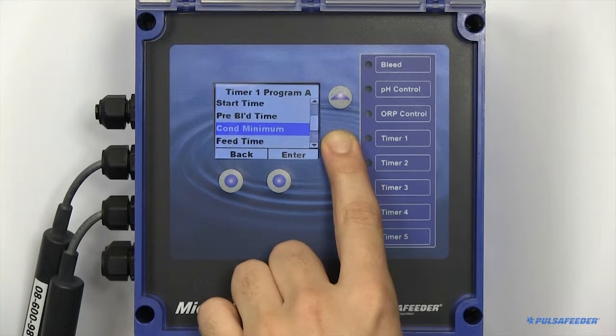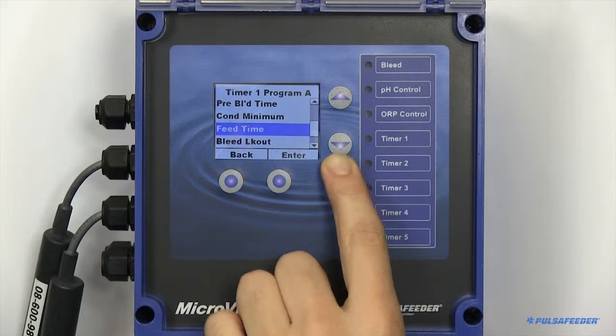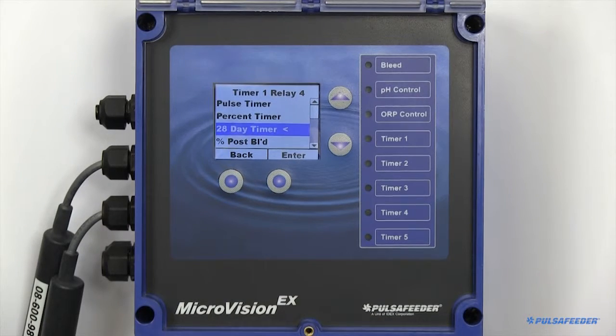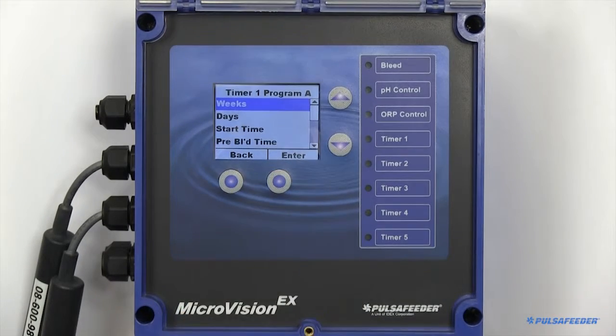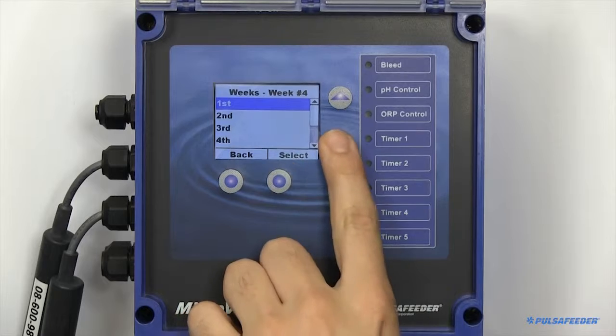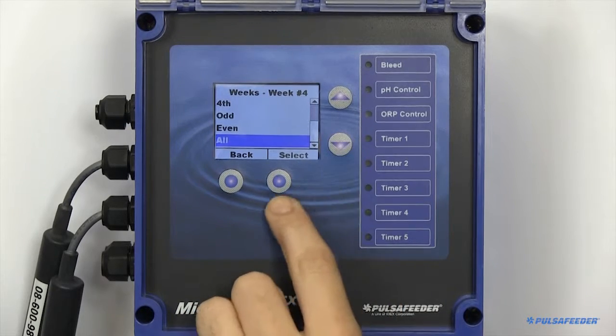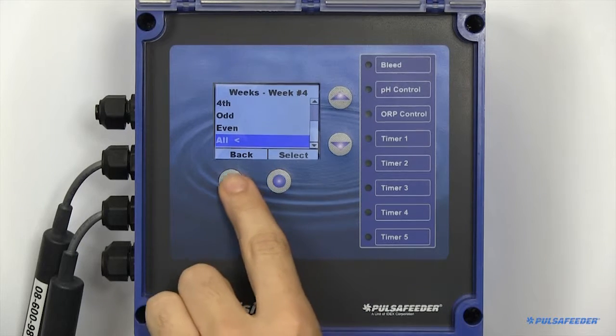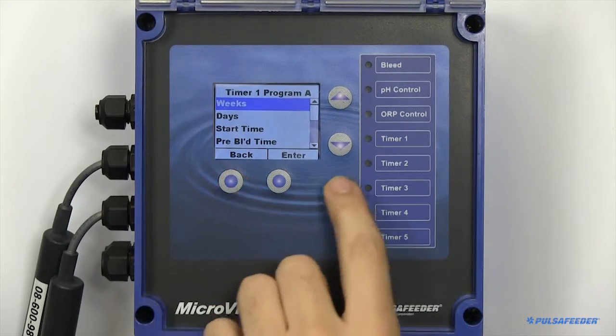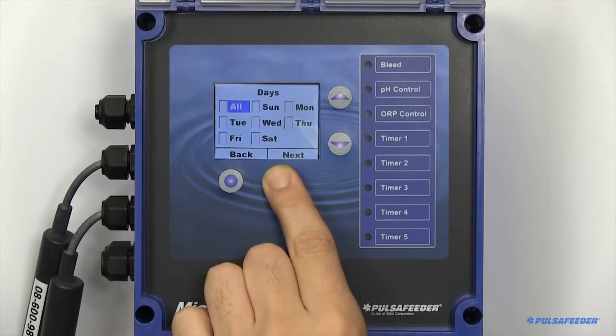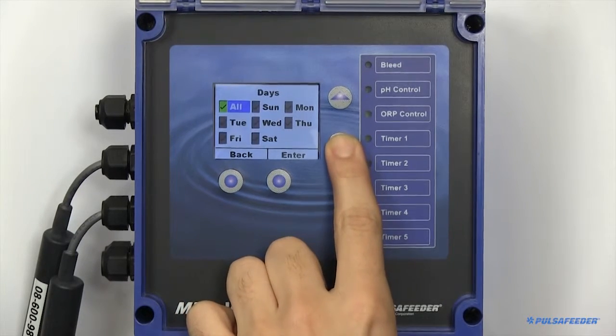A 28 day timer can be set to run on any individual week, odd weeks, even weeks, or every week. Any combination of weekday can also be selected. You may choose all of the days, or a single day.